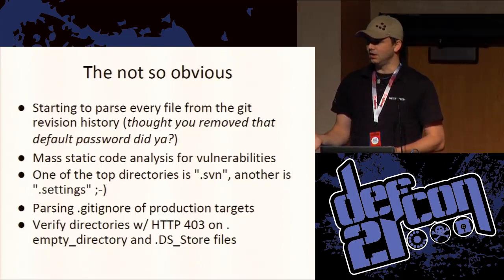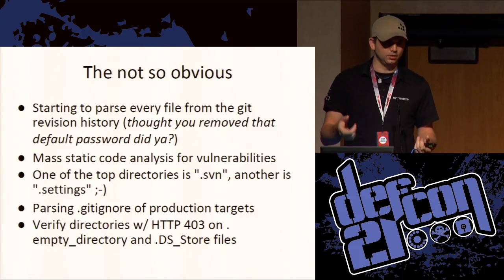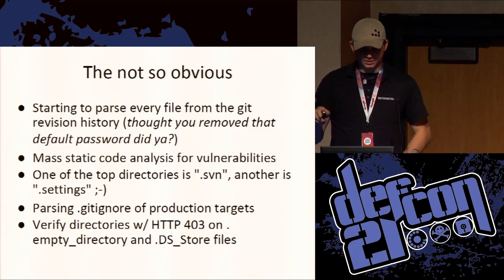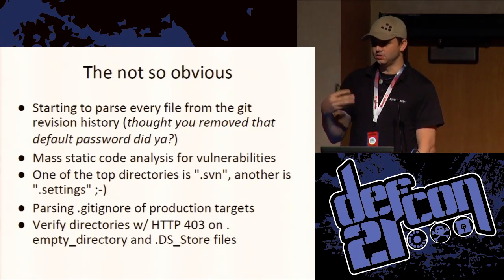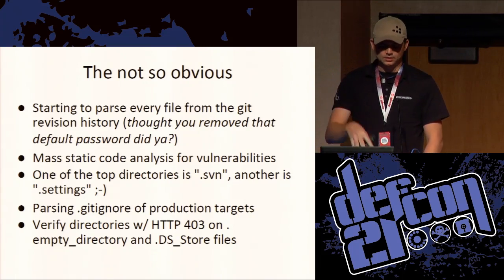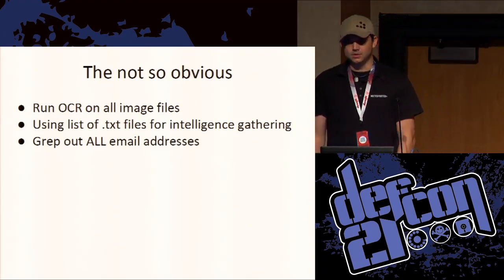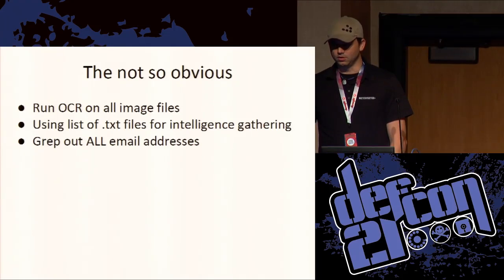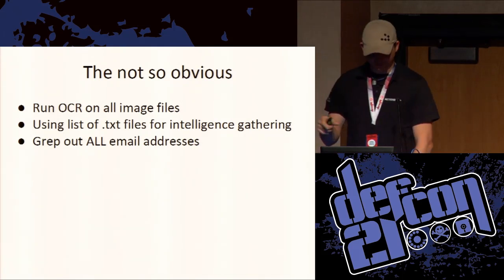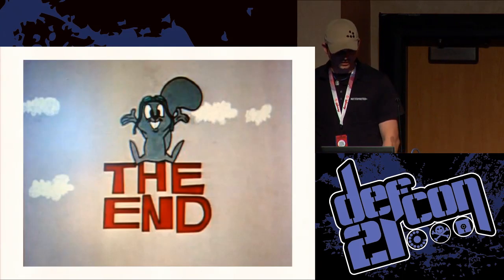Gitignore is an amazing little file that tells your Git repository what files to never commit — those are exactly the files that I want to look for because those are the things that are important. 403s, empty directories, and DS stores — on GitHub or Git as well as SVN, it doesn't let you create a directory and commit it unless there's something in it. Another thing is running OCR on all the images — we actually found someone that had their password stored in an image for the repository. It was awesome. Using a list of text files, scraping out all the emails, which he already does.